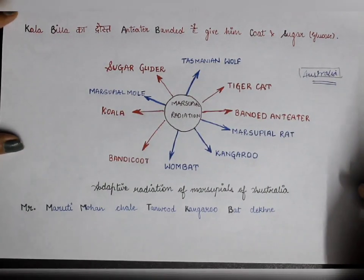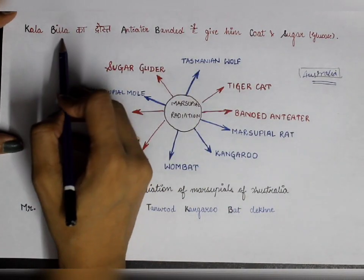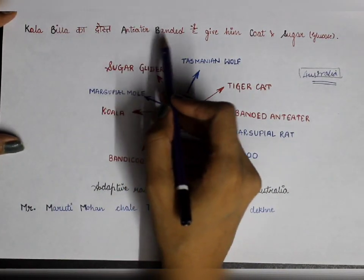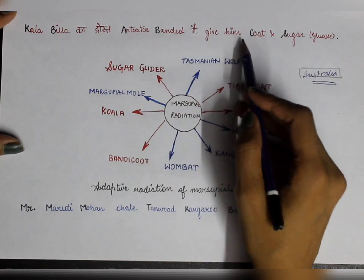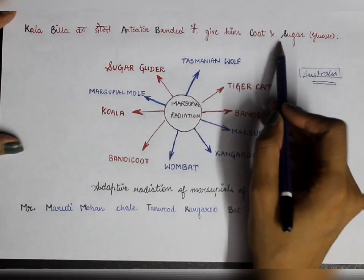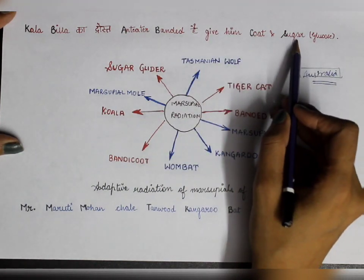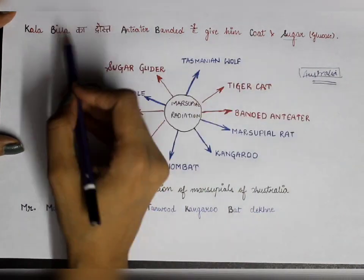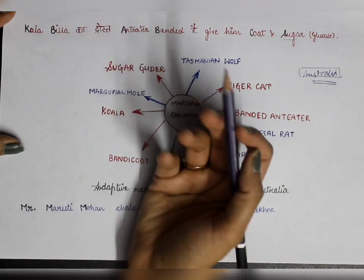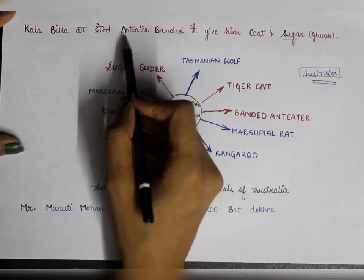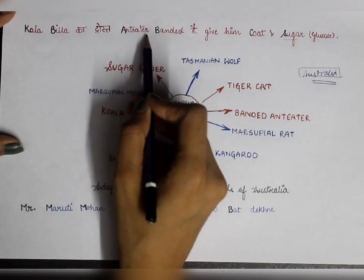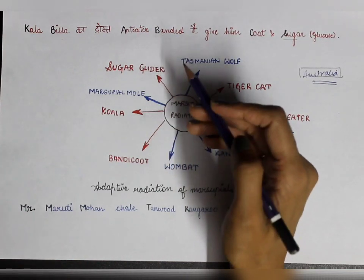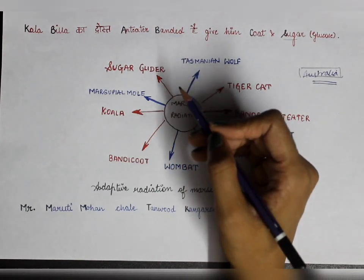The first mnemonic is: 'Kala Billah Ka Dost, Anteater Banded.' It is a billy or billah whose friend is Anteater, and he is banded — i.e., he is bounded, banned.